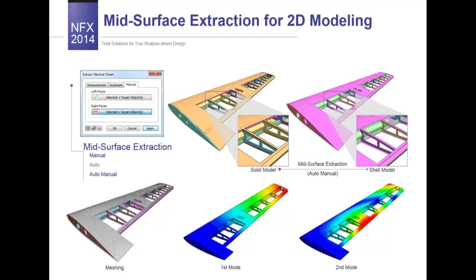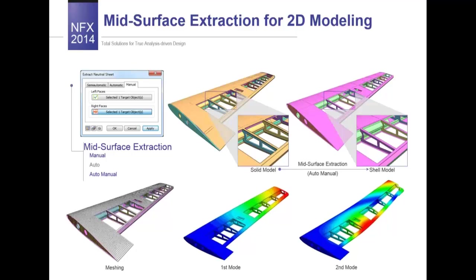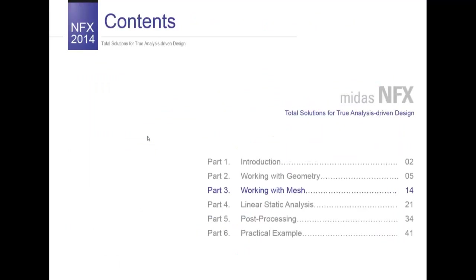FEA professionals know that meshing and solving a model with solid volumes requires much bigger resources and time. In cases where it's possible to use shell elements — such as sheet metals and other models with thicknesses — we remodel the geometry with mid-surface to make meshing and solving faster. This modeling should account for junctions between pieces and other interaction details. Extraction in MidasNFX can be done in three ways: automatic, semi-automatic, and manual. An airplane wing example illustrates mid-surface application.